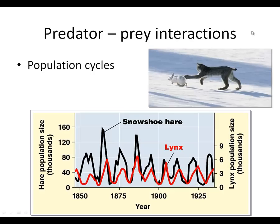Predator-prey interactions — this is a snow hare and a lynx. You can see that the lynx population, which is red, tends to go up and down and up and down. It doesn't get as high as the snow hare. But as the lynx goes down, the population of snow hares goes up; their population goes up, snow hare goes down. You can see they kind of mirror each other. As the prey population goes up, the predator population goes up as well.